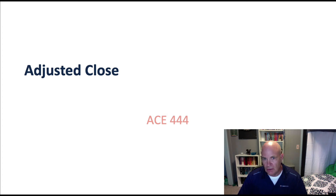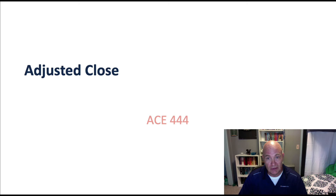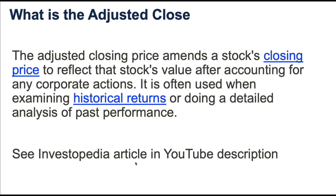The adjusted close, as we saw, you can download it from Yahoo Finance. You can get that from many financial sites. We are going to use it extensively this semester to calculate returns from historic data. The adjusted close is actually the stock price, but it's amended, and it reflects the stock's value after accounting for corporate actions. It is almost always used for examining historical returns.